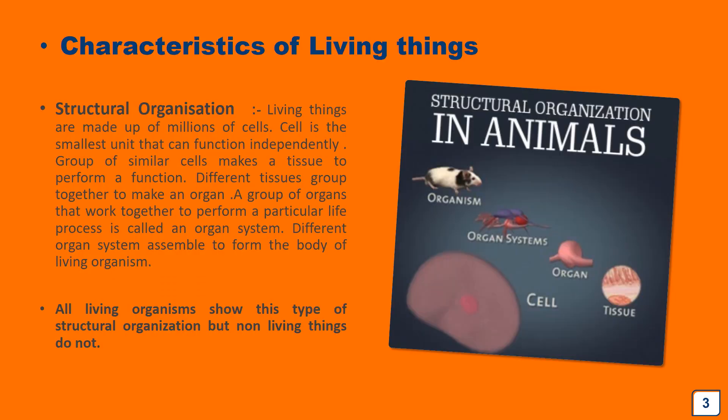Let's start with the characteristics of living things. First, we should understand which things are living and which are non-living. If we look around, we find different plants, animals, and human beings — they are all living things. On the other hand, clouds, rocks, soil, your books, pens, table, and phone are all examples of non-living things.